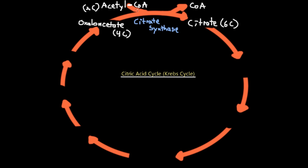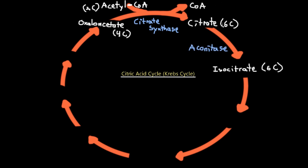The CoA is released from the acetyl group and remains in the matrix ready for the next pyruvate. This synthesis of citrate is catalyzed by the enzyme citrate synthase — note that enzyme names in this cycle typically reflect either the reactant or product, and 'synthase' indicates it assists in synthesis. The result is a six-carbon citrate molecule.